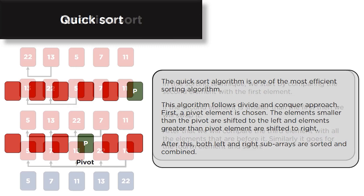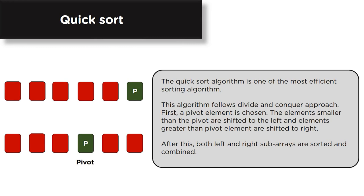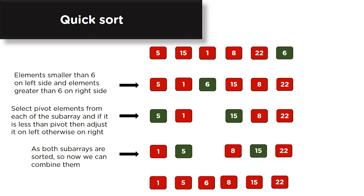Next is quick sort — one of the most widely used and most efficient sorting algorithms. Quick sort follows a divide and conquer approach. A pivot element is selected and the array is partitioned into two halves: elements smaller than the pivot are shifted to the left, and elements greater are shifted to the right. For example, with six elements 5, 15, 1, 8, 22, and 6, we select 6 as the pivot element.